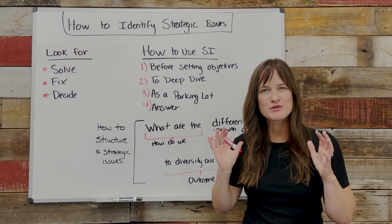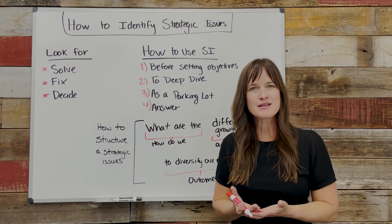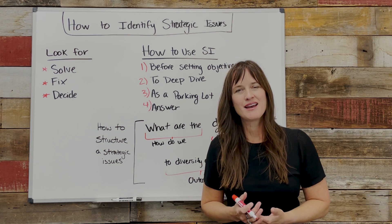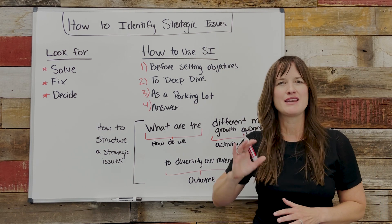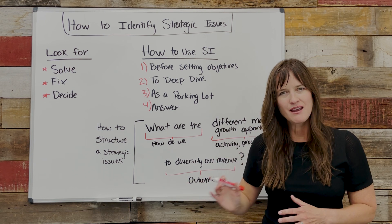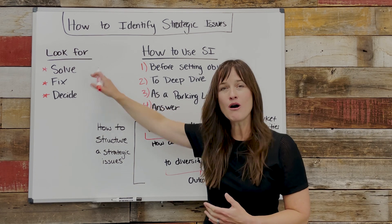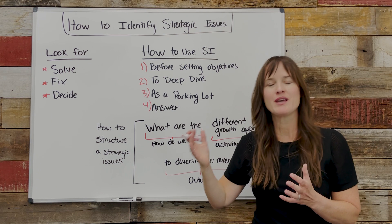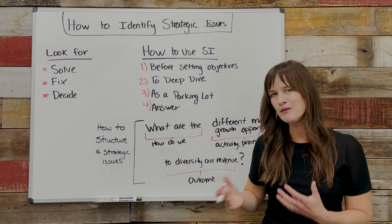Strategic issues are those topics that come up at the beginning of any planning process. Normally when you're trying to assess your current state and you're talking to your planning team members, your stakeholders, your customers, and your staff, there are those things that kind of stick out as major themes that you know you need to solve for, fix, or decide before you go into planning the year. So they just kind of bubble up.